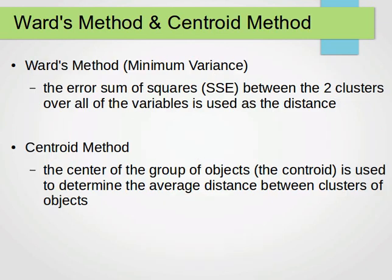The other two methods — Ward's method and the centroid method — are also quite simple. In Ward's method, or the minimum variance method, the error sum of squares between the two clusters over all variables is used as the distance. In the centroid method, the centroid — usually known as the center of gravity or the center of a group of objects — is used to determine the average distance between clusters.